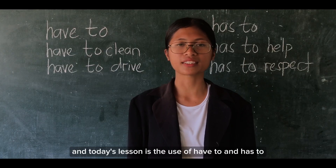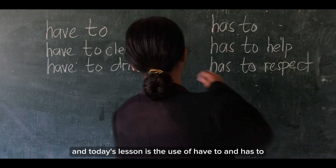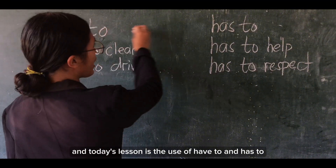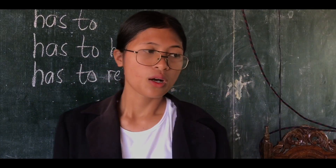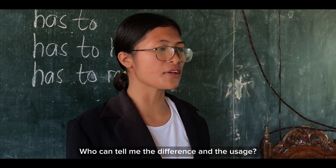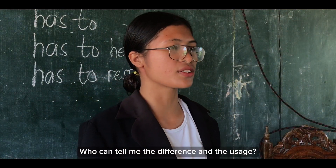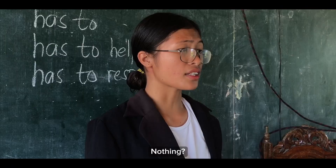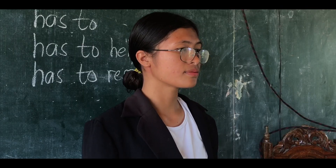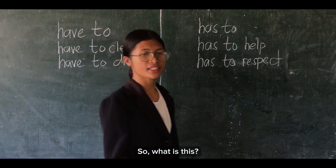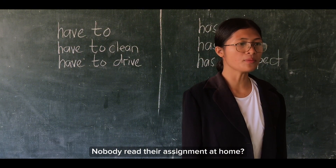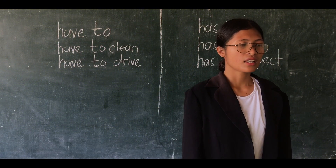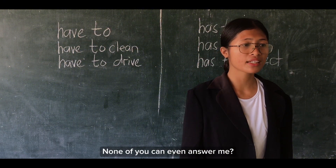Today's lesson is the use of Have-to and Has-to. Who can solve the difference in the usage? Misiligan? Nothing? Nobody read their assignment at home? None of you can even answer me?